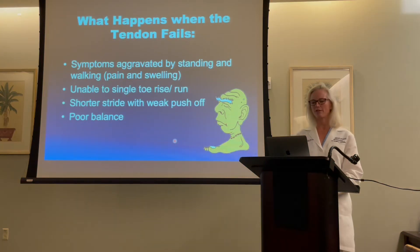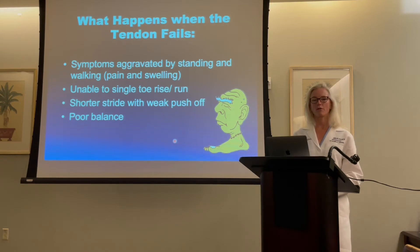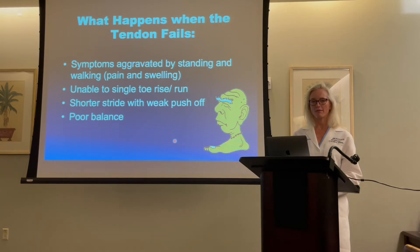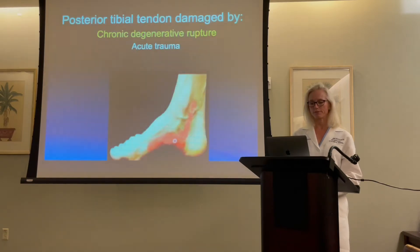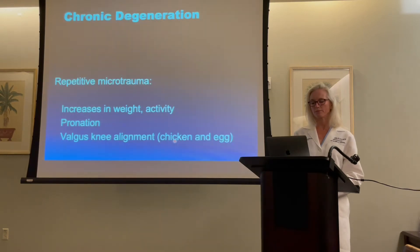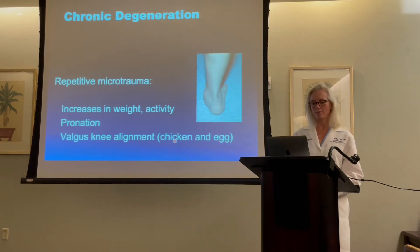As the posterior tibial tendon fails, there is pain with standing and walking. You are unable to do a single toe rise. You have a shorter stride with weaker push off, and your balance suffers. Over time, the tendon starts to fray and get little rips and tears. This is caused by increases in weight, activity, a pronation-type gait, and also valgus knee alignment.